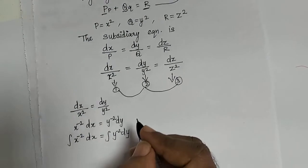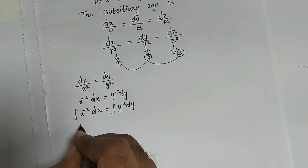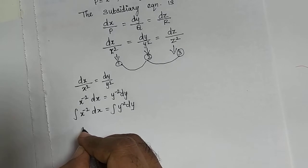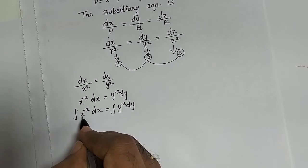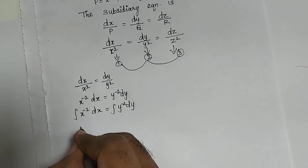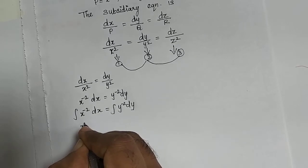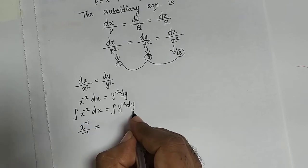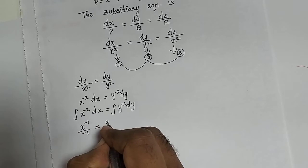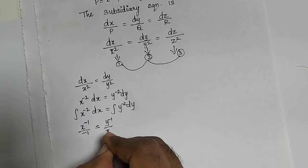Integrating both sides: the integral of x to the power minus 2 dx equals the integral of y to the power minus 2 dy. Using the integration formula — integral of x to the power n is x to the power (n+1) divided by (n+1) — with n equals minus 2, integrating gives x to the power minus 1 divided by minus 1 on the left.